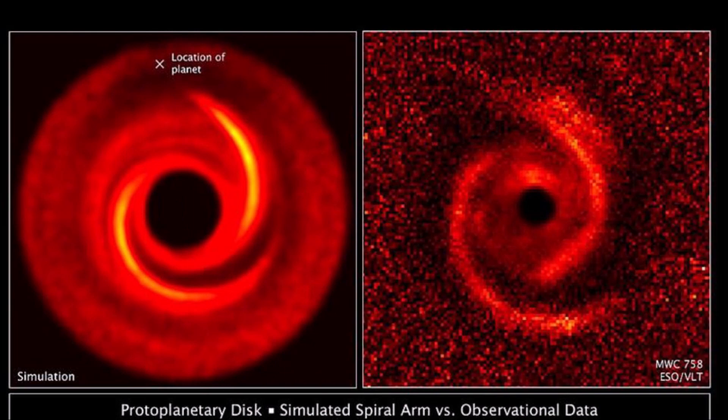Our solar system formed about 4.5 billion years ago from a dense cloud of interstellar gas and dust. The solid materials collided with each other and accreted to form gradually larger bodies in orbit around the central protostar that became our Sun. A planet is defined as a celestial body that is in orbit around the Sun, has sufficient mass to acquire a spherical shape, and clears its orbit of other bodies by becoming gravitationally dominant such that there are no other bodies of comparable size other than its natural satellites under its gravitational influence.